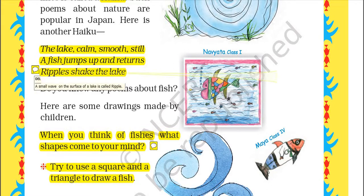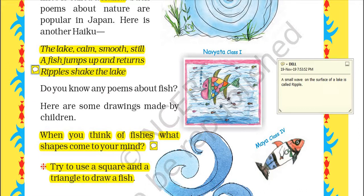The meaning is: there is a lake which is calm, smooth and still. Then a fish jumps up and returns back. On this activity, a small wave on the surface of the lake arises — that is called a ripple — and this disturbs the balance of the lake.